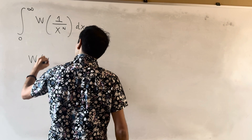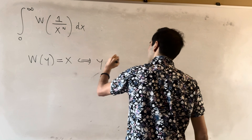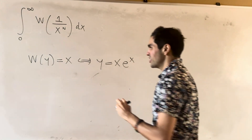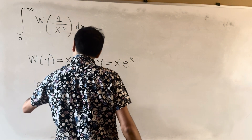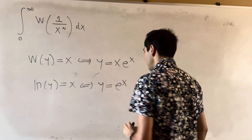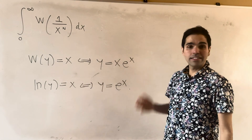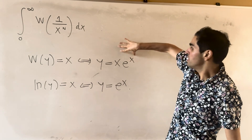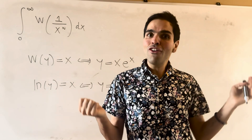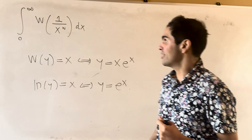It's the inverse of the function x·eˣ, in the sense that if W(y) = x, that's the same thing as y = x·eˣ. Compare this with ln: ln(y) = x if and only if y = eˣ. So W is to ln what x·eˣ is to eˣ — it inverts x·eˣ. This has lots of applications, for instance for solving the Bose-Einstein equations and the Fermi-Dirac equations as well.